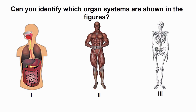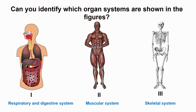In the first figure, we can see the respiratory system and digestive system. In the second figure, we can see the muscular system. And in the third figure, we can see the skeletal system. In the previous class, we have learned about the respiratory system, digestive system, and muscular system.